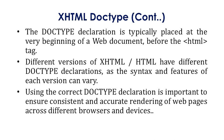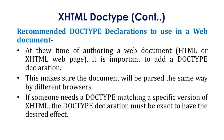The doc type declaration is typically placed at the very beginning of a web page, before the HTML tag starts. Different versions of XHTML and HTML have different doc type declarations, as the syntax and features of each version can vary. Using the correct doc type declaration is important to ensure consistent and accurate rendering of web pages across different web browsers and devices.